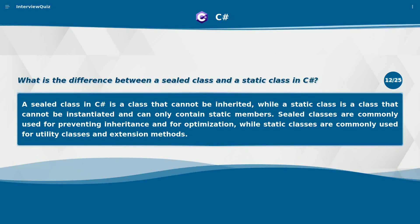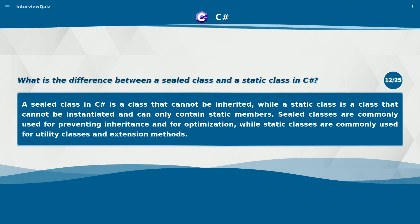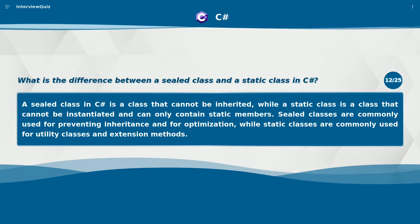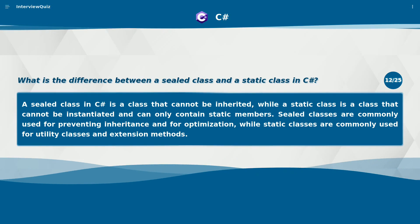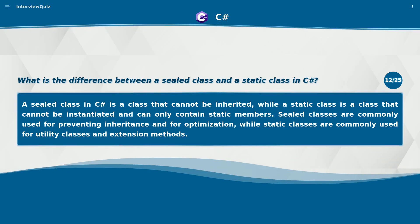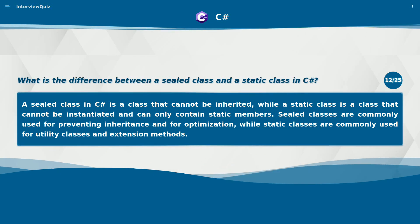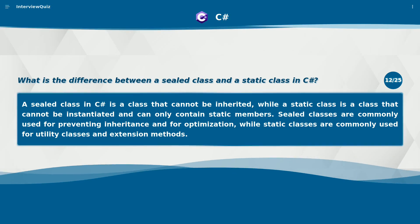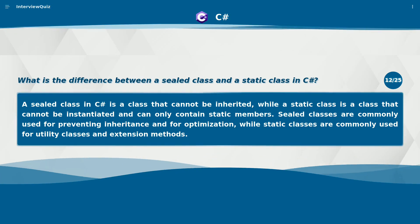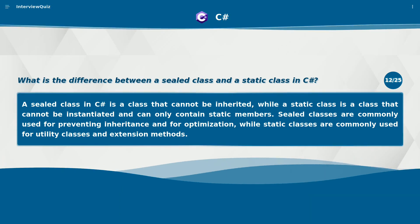What is the difference between a sealed class and a static class in C#? A sealed class in C# is a class that cannot be inherited, while a static class is a class that cannot be instantiated and can only contain static members. Sealed classes are commonly used for preventing inheritance and for optimization, while static classes are commonly used for utility classes and extension methods.